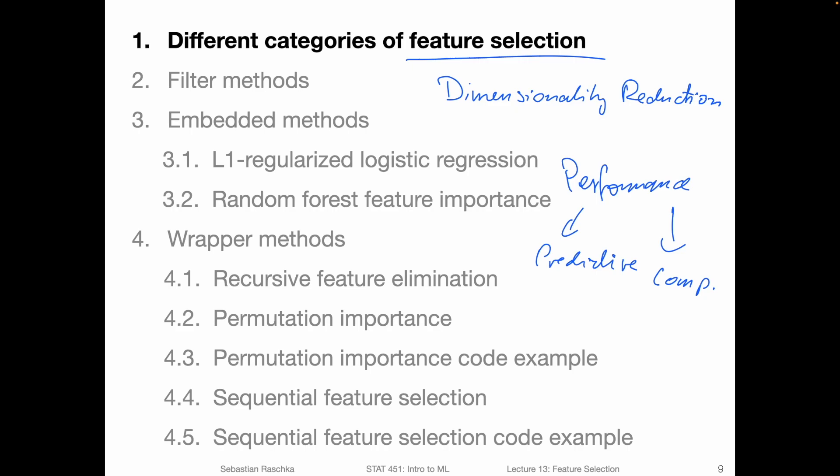Now, there are many different kinds of feature selection algorithms, and we can roughly organize them into three broader subcategories. In this video, I will briefly talk about these different categories and highlight how they are different from each other. Then in the upcoming videos, we will dive into these different categories in more detail.